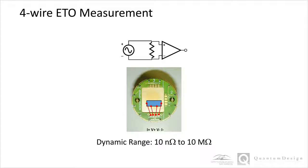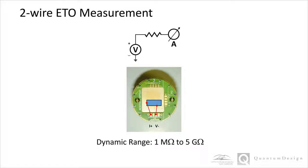The ETO can operate in a low-impedance 4-wire measurement mode or a high-impedance 2-wire measurement mode. In the 4-wire mode, the acceptable impedance range is between 10 nano-ohm and 10 mega-ohm. Two-wire measurements can be performed from 1 mega-ohm up to 5 giga-ohms.